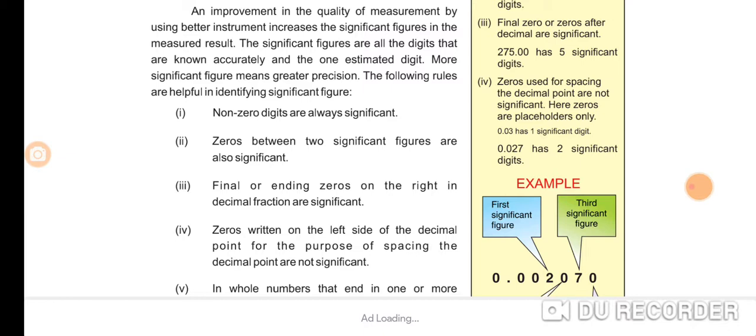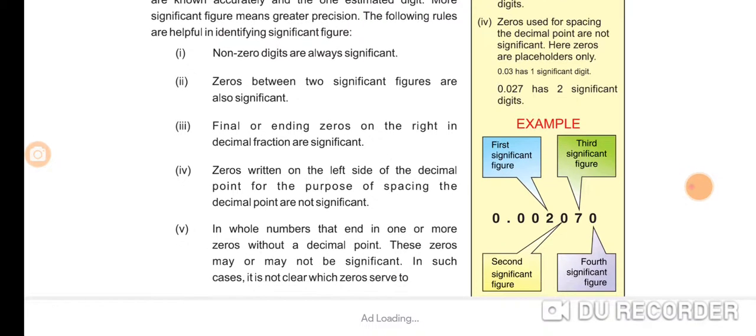(5) In whole numbers that end in one or more zeros without a decimal point, these zeros may or may not be significant. In such cases, it is not clear which zeros serve to locate the decimal point. Thanks for today.